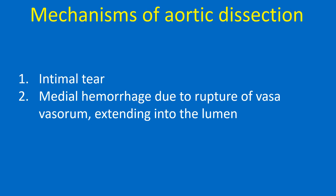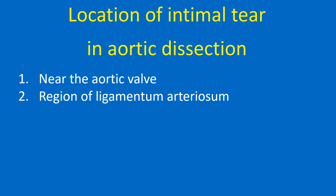Mechanisms of aortic dissection include intimal tear and medial hemorrhage due to rupture of vasa vasorum extending into the lumen.